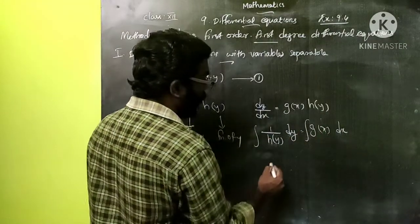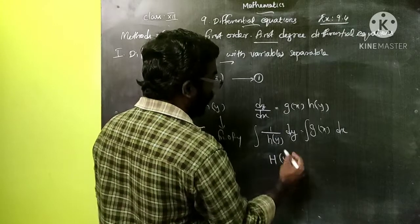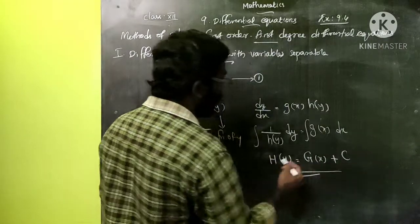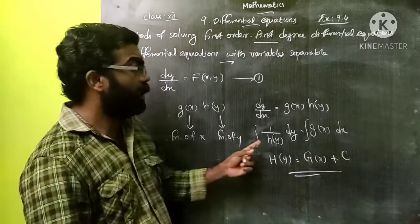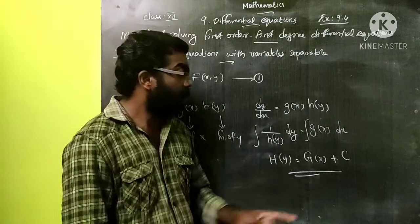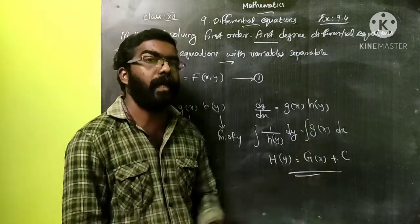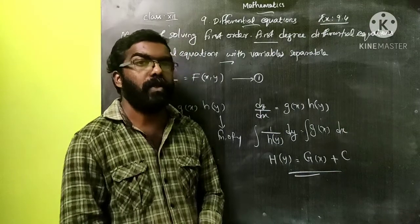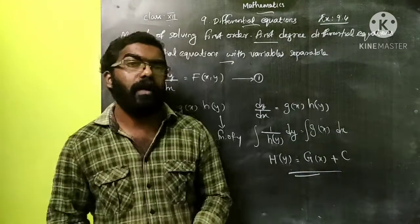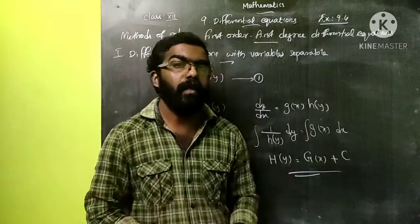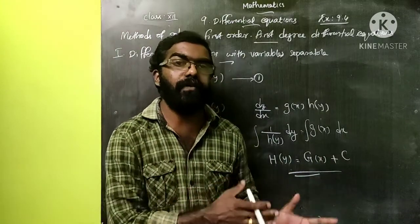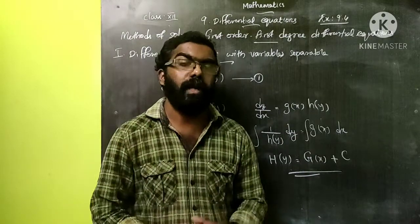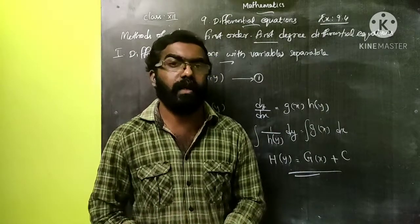Integrating both sides, we get H(y) = G(x) + integrating constant c, where H(y) is the integral of 1/h(y) and G(x) is the integral of g(x) and c is the arbitrary constant. So the steps in variable separable form: first we separate the variables, collect the terms involving y to the left side and x to the right side, then integrate to get the solution.